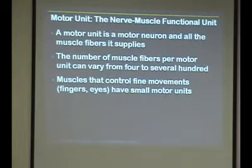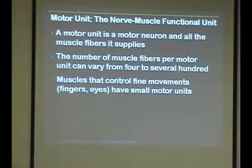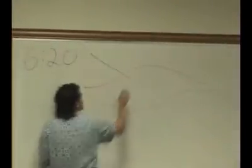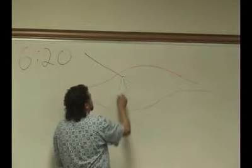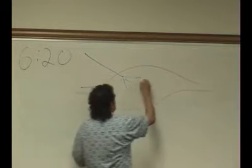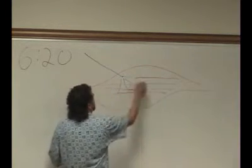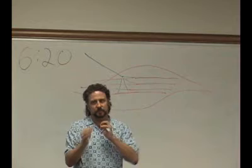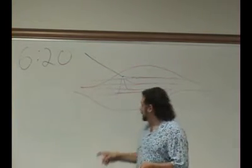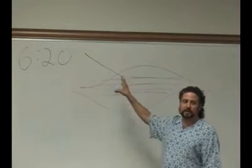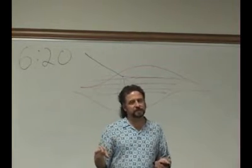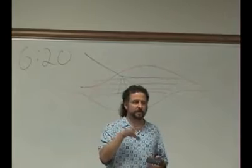Now we'll talk about a term called a motor unit, or neuromuscular functional unit. Basically, we're linking a nerve to a muscle. Here's the muscle and here's the nerve — that nerve splits up and innervates different muscle fibers. So a motor unit is one nerve going in and innervating certain muscle fibers. The number of fibers in a motor unit varies — one nerve can supply many muscle fibers, or it can go to only a smaller number.